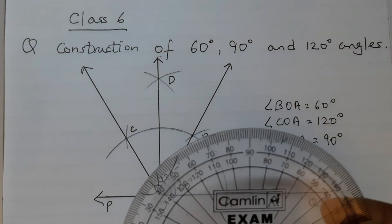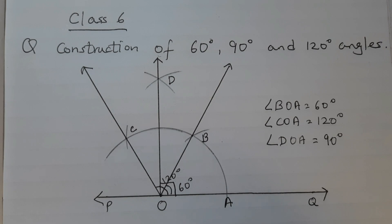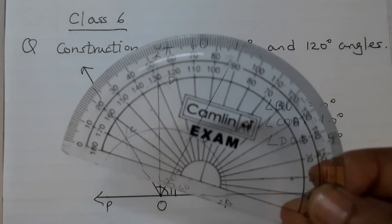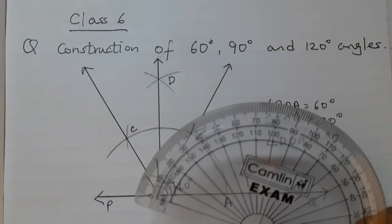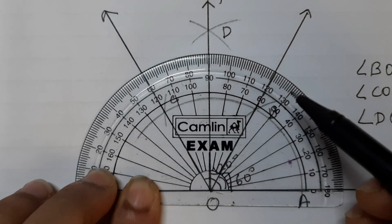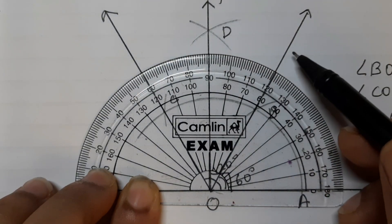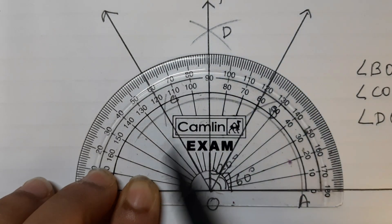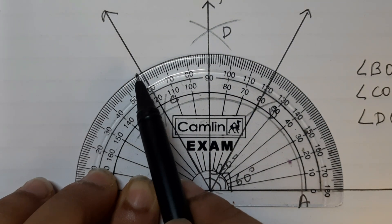If you want, you can use a protractor to measure if you have got the angles correctly. This is not required. This is only for you to check if you have got it correctly. Place the center of the protractor here. And now you can see here, this is 60 degrees, this is 90 degrees and this is 120 degrees.